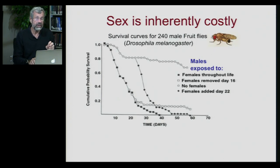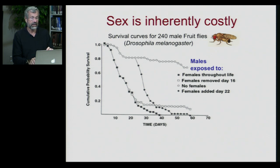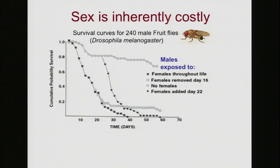And we can see this direct trade-off in fruit flies. This is a study of Drosophila melanogaster, and this is a survival curve. We start out with everybody being alive at a certain age. Now we're going to have male Drosophila exposed to different levels of reproduction.